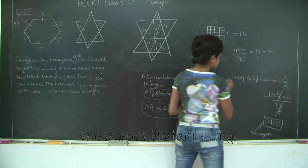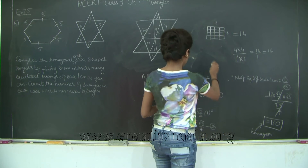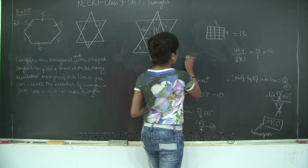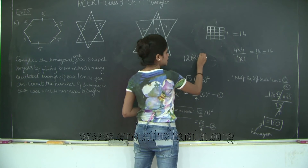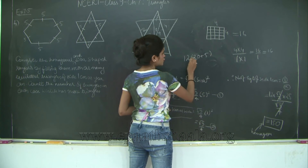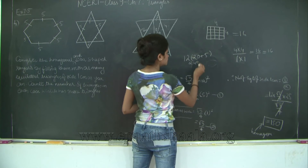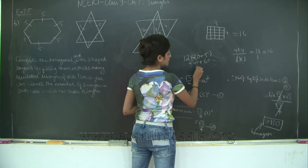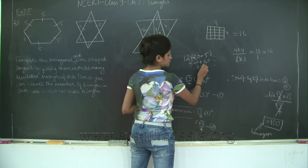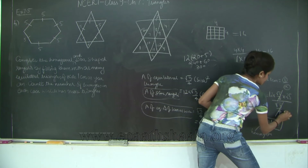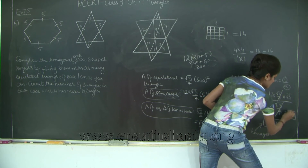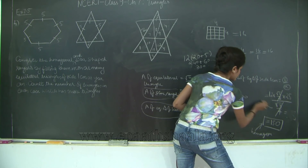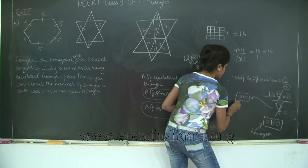So we get 12 × 25. Let me calculate: 12 × 25 can be written as 12 × (20 + 5) = 240 + 60 = 300. So we get 300 equilateral triangles of side 1 centimeter for the star Rangoli.